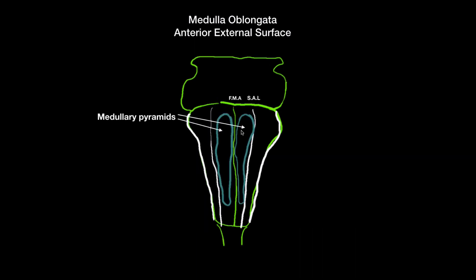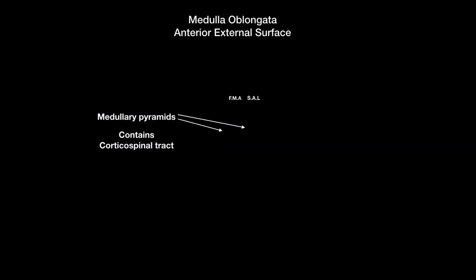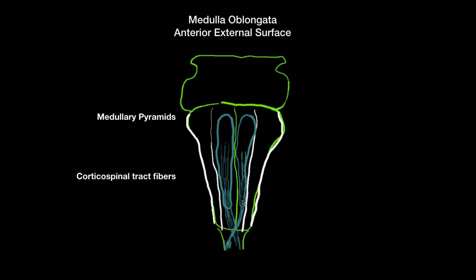On either side of the fissura mediana anterior you're going to have the medullary pyramids, and the medullary pyramids contain what is called the corticospinal tract. I'm going to talk more about the corticospinal tract later on when I discuss the cross section. But for now, the corticospinal tract has some fibers that go down and cross at the lower part of the medulla oblongata, and that crossing of fibers is called the decussatio pyramidum.